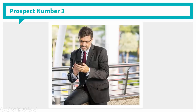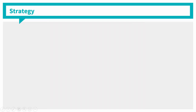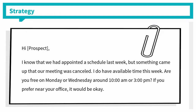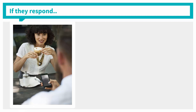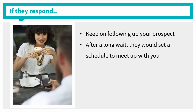Prospect number three: these prospects have responded to your message but you haven't heard from them since. They are probably still interested but something came up and their priority has changed. Here's what you can do — send a message like: 'Hi [prospect], I know we had a point in the schedule last week but something came up and our meeting was canceled. I do have available time this week. Are you free on Monday or Wednesday around 10 a.m. or 3 p.m.? If you prefer near your office, that will be okay.' If they respond and make the meeting possible, great. If they have reasons to postpone, respect their decision and keep following up timely. You might be surprised that after a long wait, they would set a schedule to meet. So be patient.